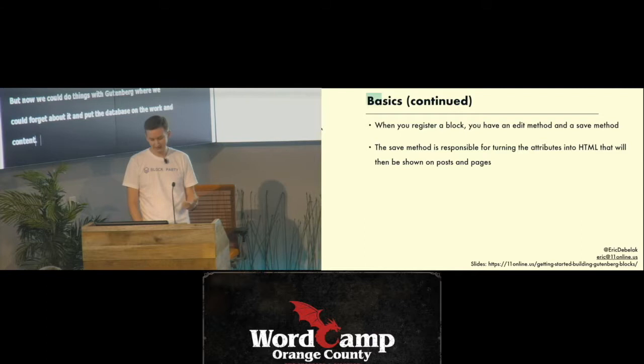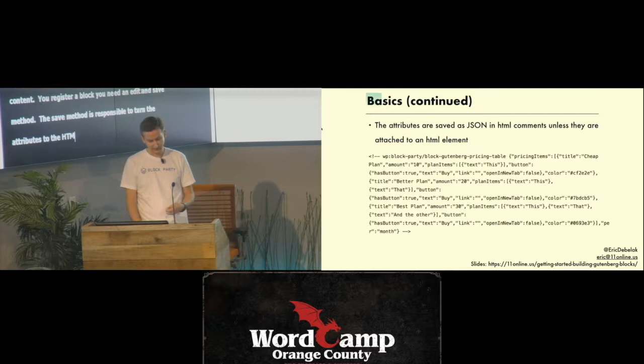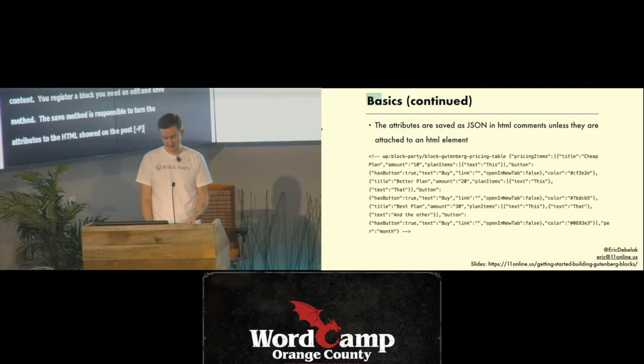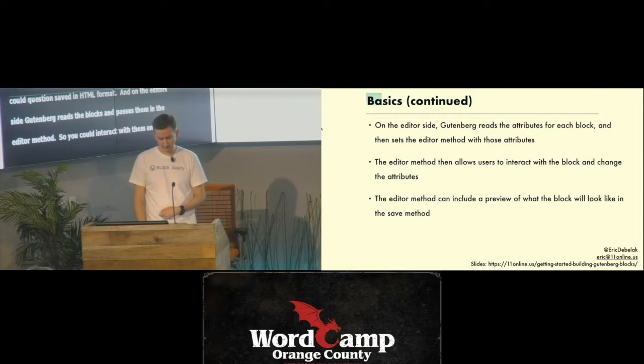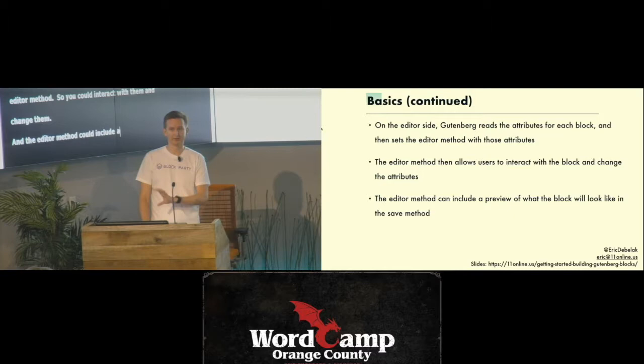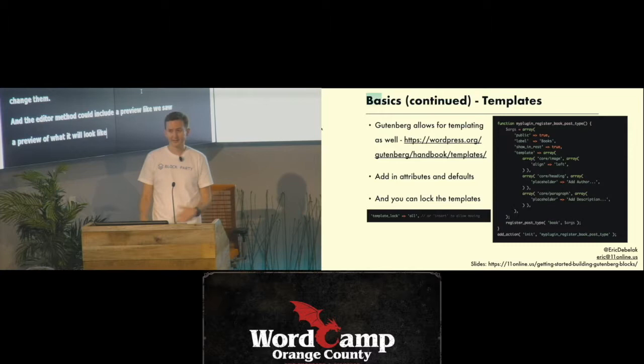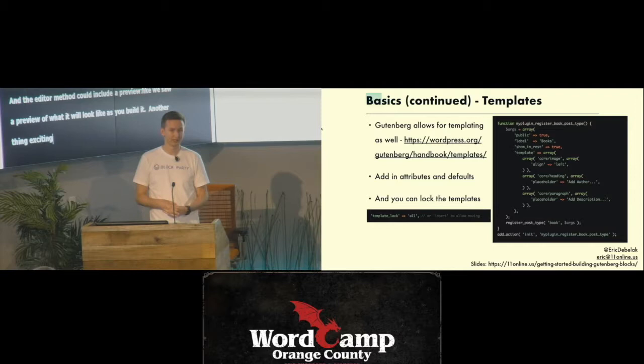One exciting thing about Gutenberg is we currently do a lot of sites using post-meta, which is not great for performance. Now we can forget about post-meta in a lot of ways and just put all that content right in the WordPress content. When you register a block, all you need is an edit method and a save method. The save method turns the attributes into HTML shown on posts and pages. The attributes can be saved in HTML comments in JSON format, and on the editor side, Gutenberg reads those attributes and passes them to the edit method so you can interact and change them.